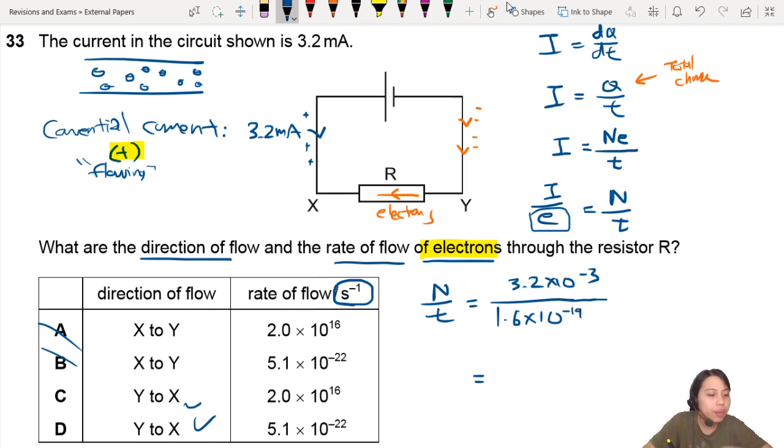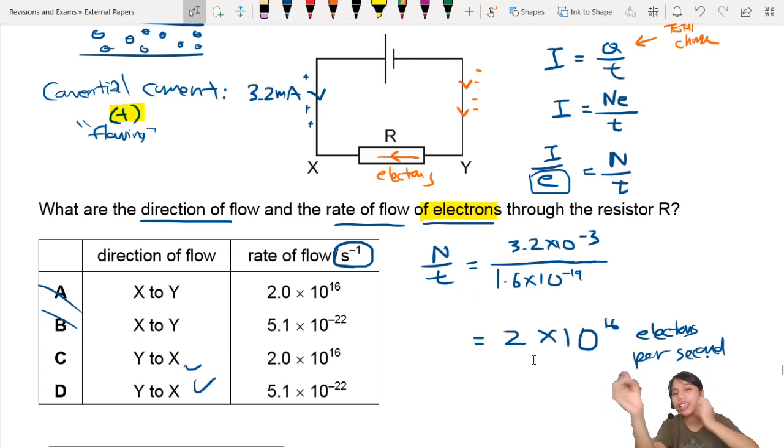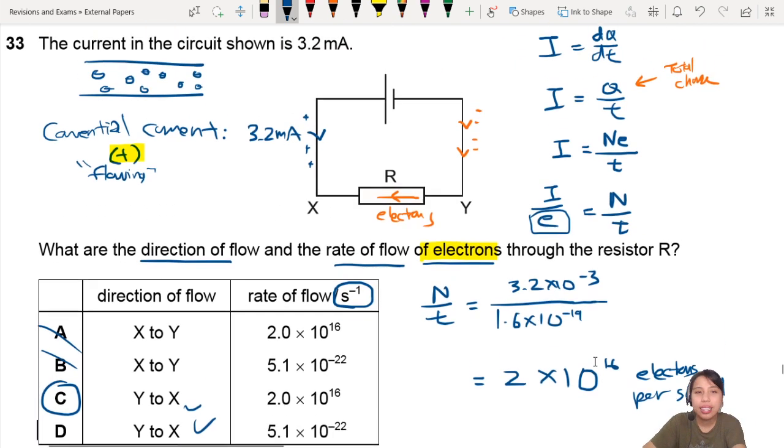So what do we have here? If we divide everything correctly, we should get about 2 times 10 to the 16 as our rate of flow of electrons per second. So I guess you could say electrons per second. That's why it's s negative 1 and not coulombs per second or something like that. So the best choice would be C. That's your answer for this current circuit.